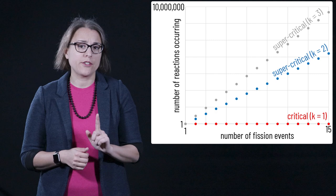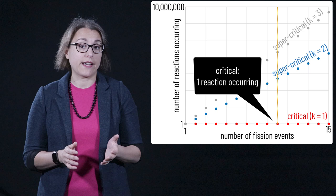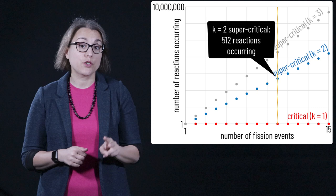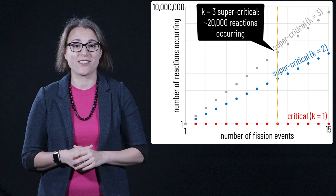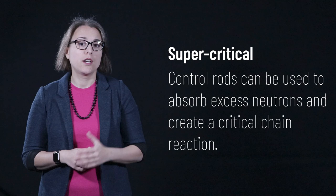Assuming that one fission reaction started a chain reaction, after ten fission events, a critical reaction has one fission event occurring, a supercritical reaction that generates two new events will have 512 fission events occurring, and a supercritical reaction that generates three new events will have nearly 20,000 fission events occurring. Supercritical reactions are not tenable in nuclear power generation. To control the number of neutrons present in a chain reaction, control rods are used to absorb excess neutrons and keep a reaction at the critical stage.